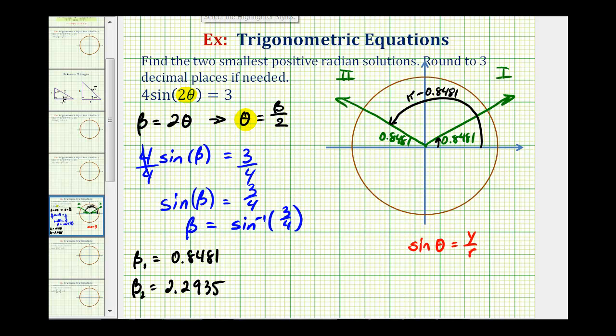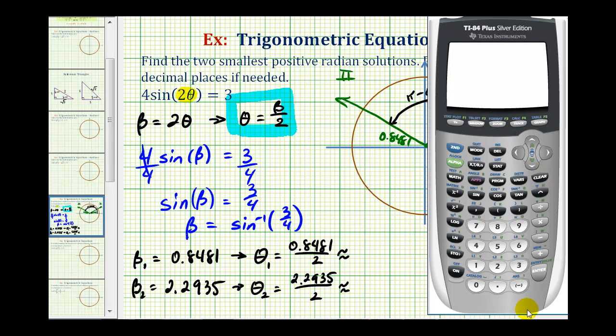Remember our goal is to find theta, not beta. And since theta is equal to beta divided by two, we'll now divide these by two to find our solutions. So we have 0.8481 divided by two. Now we will round to three decimal places. So theta is approximately 0.424.